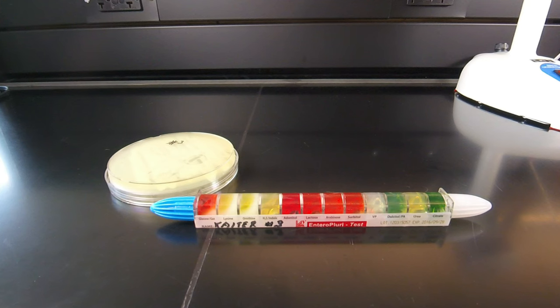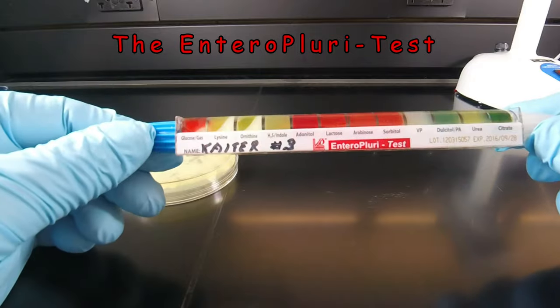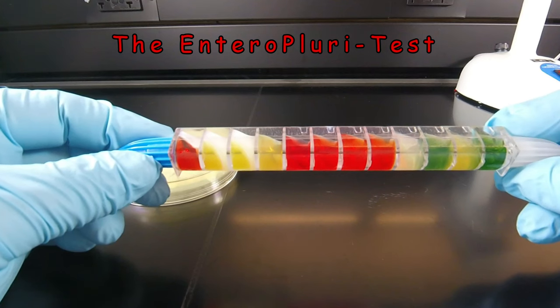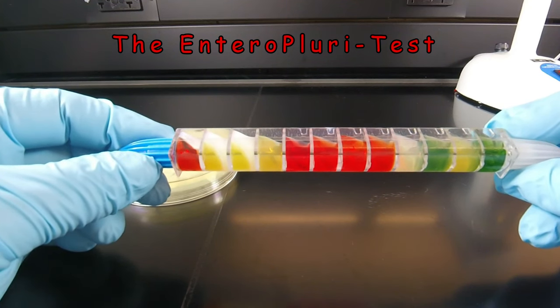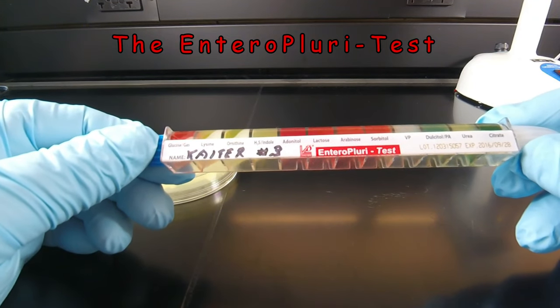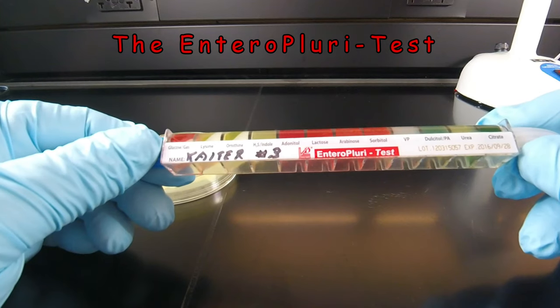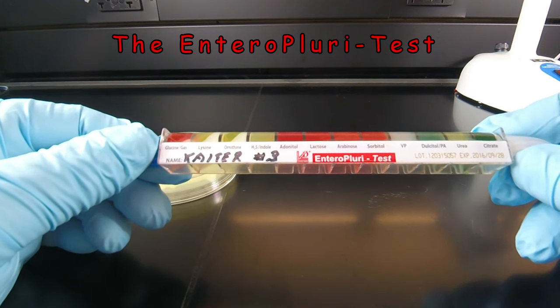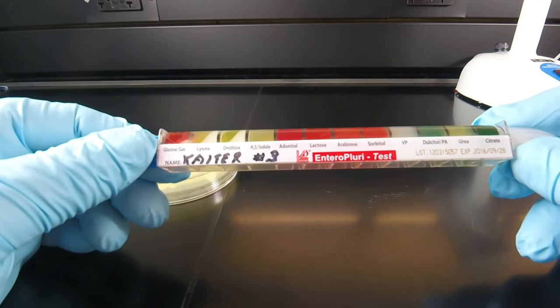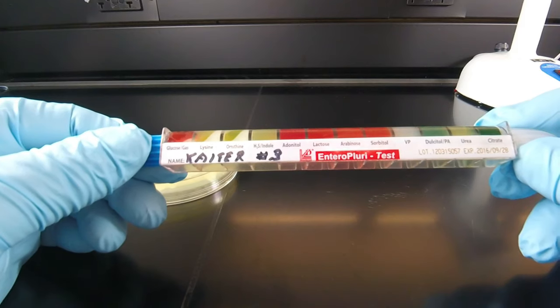In this video lesson, we're going to learn how to inoculate the Entrapluri test, previously called an EntraTube. The Entrapluri test is a plastic tube that contains 12 different agars, which allow us to do 15 different biochemical tests. This is used primarily to identify glucose-fermenting gram-negative bacilli belonging to the bacterial family EntraBacteriaceae. This test will usually determine the genus and the species.